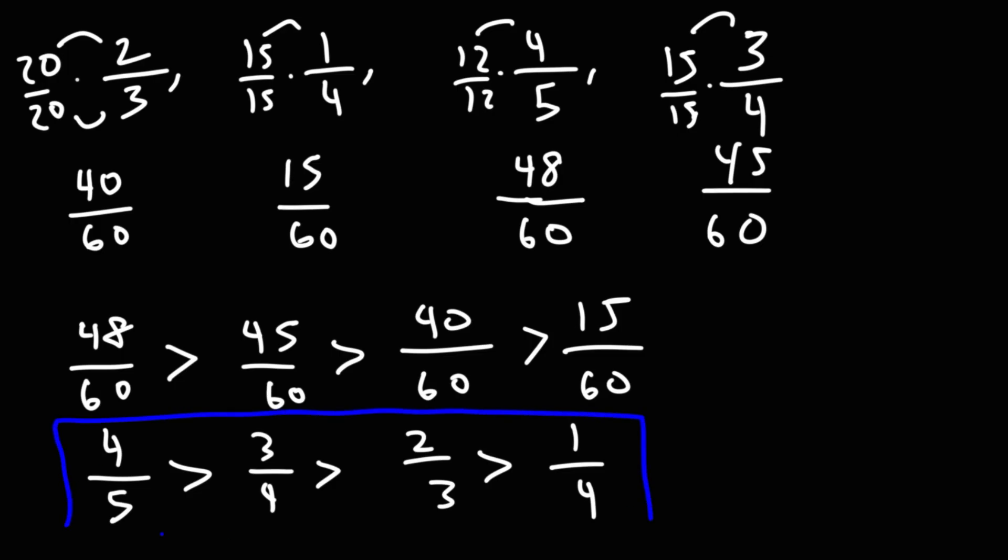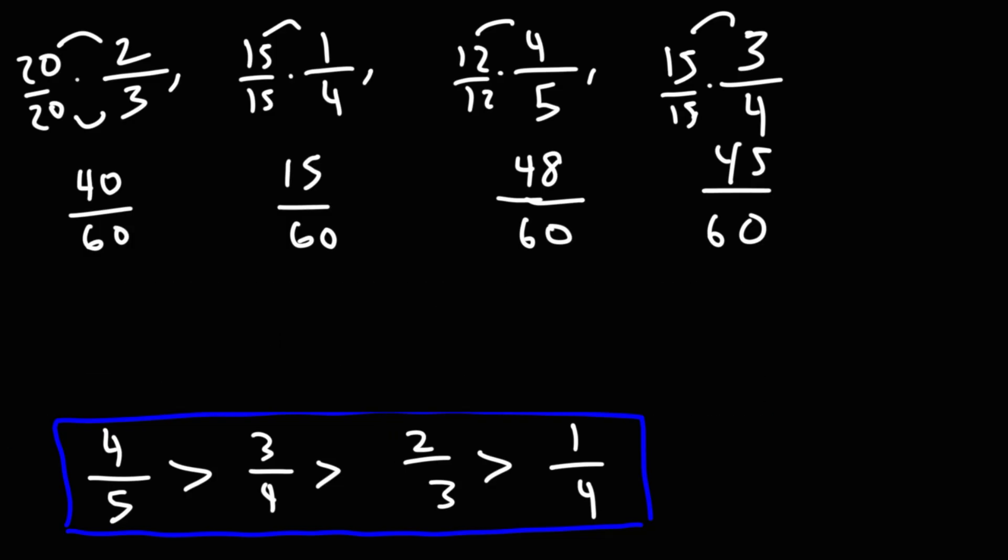That's how we can rank fractions from the greatest value to the lowest value. And of course, you could confirm it using the calculator. If you were to type in 4 divided by 5, you'll get 0.8. 3 divided by 4 is 0.75. 2 over 3 is 0.6 repeating, or we can round that and say 0.67. And 1 fourth is 0.25. So we can see we have it from greatest to least.